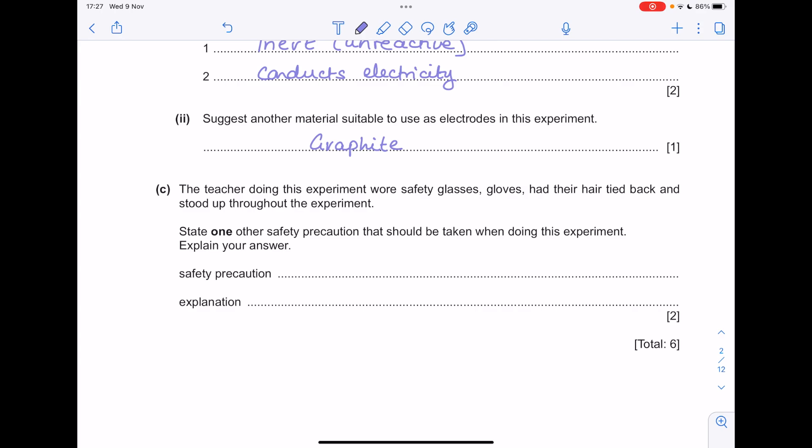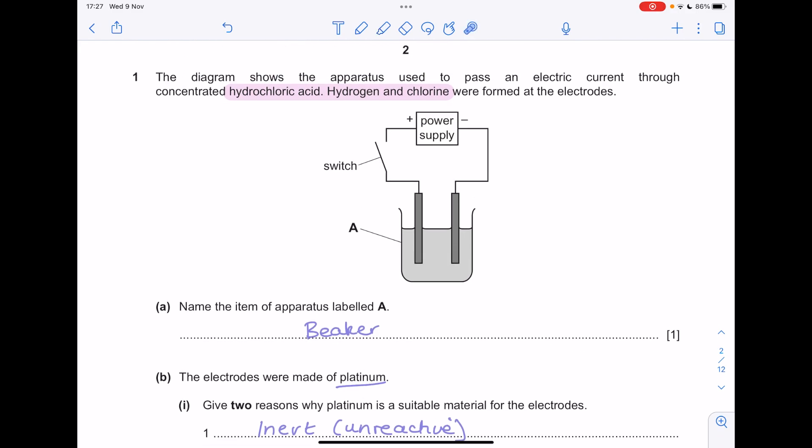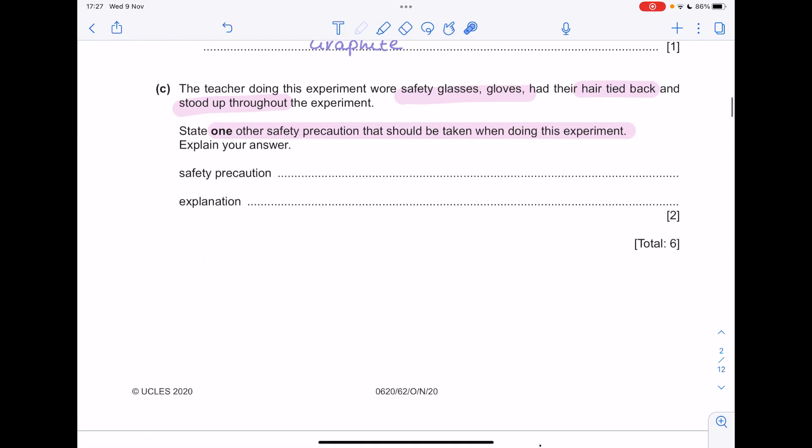The teacher doing this experiment wore safety glasses, gloves, had their hair tied back and stood up throughout the experiment. State one other safety precaution that should be taken when doing this experiment. Notice, however, that we've got chlorine forming. Now chlorine is incredibly toxic, which means this experiment should really be carried out in a fume cupboard. Why? Because chlorine is toxic.